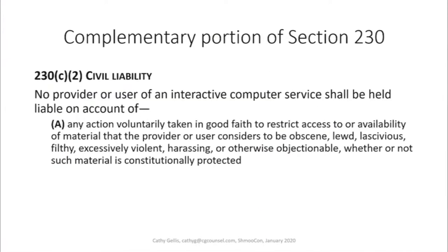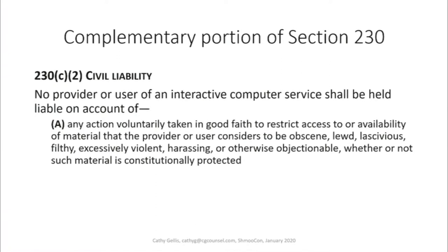There is a parallel provision in Section 230 that we don't talk about as much. Congress wanted two things — the most good stuff and the least bad stuff. We've made it safe by giving the platforms immunity for leaving up something that might be bad. We also make it safe for them to try to take stuff down. Congress wanted the platforms to help get rid of all the crap on the internet, and we had to make it safe for them to do so.